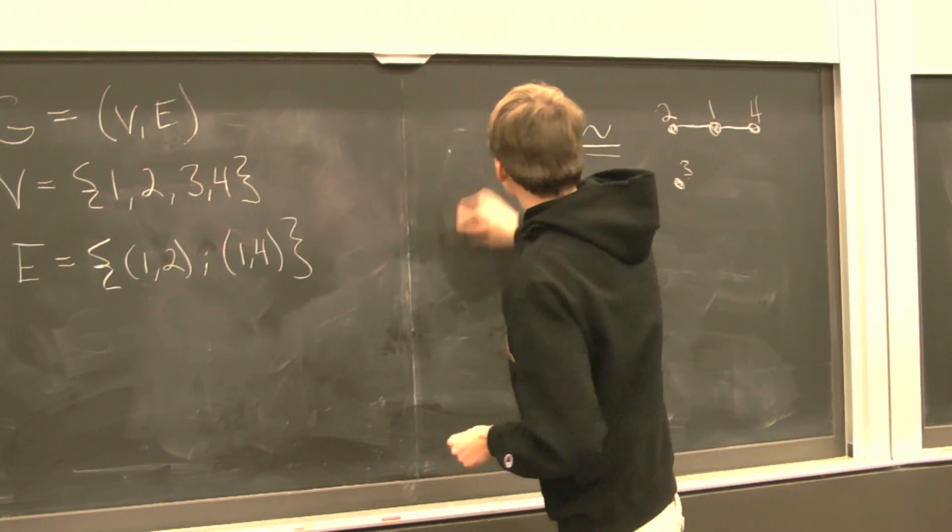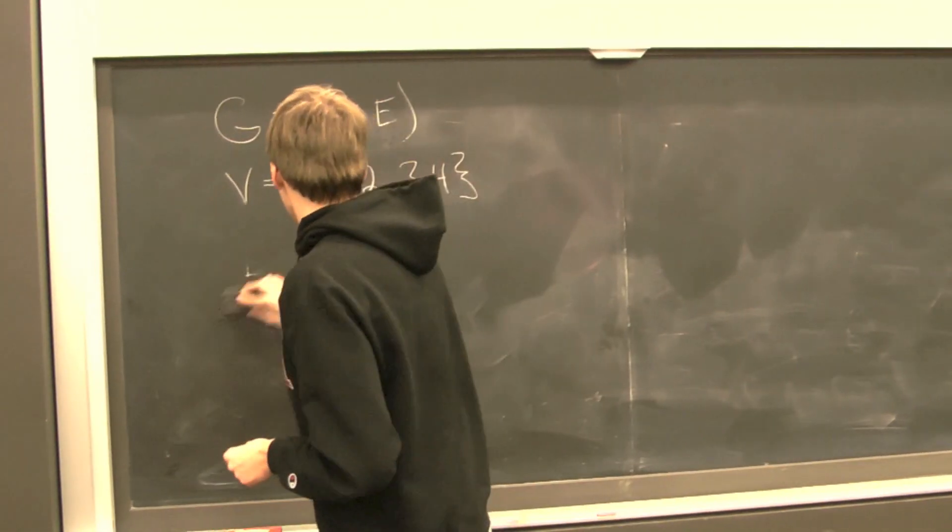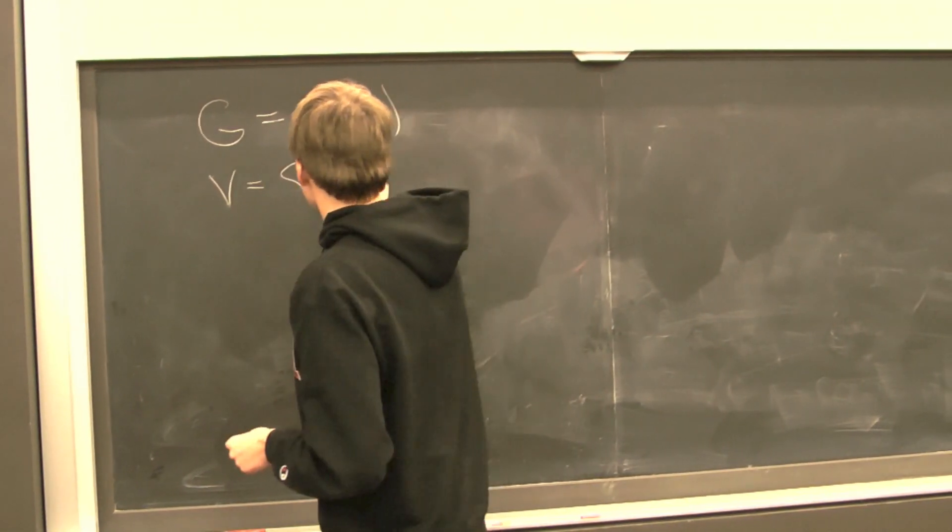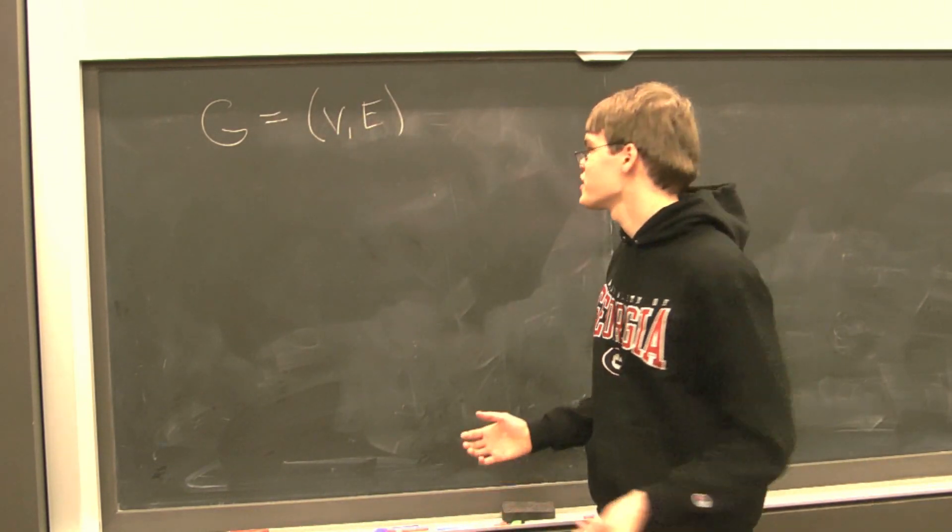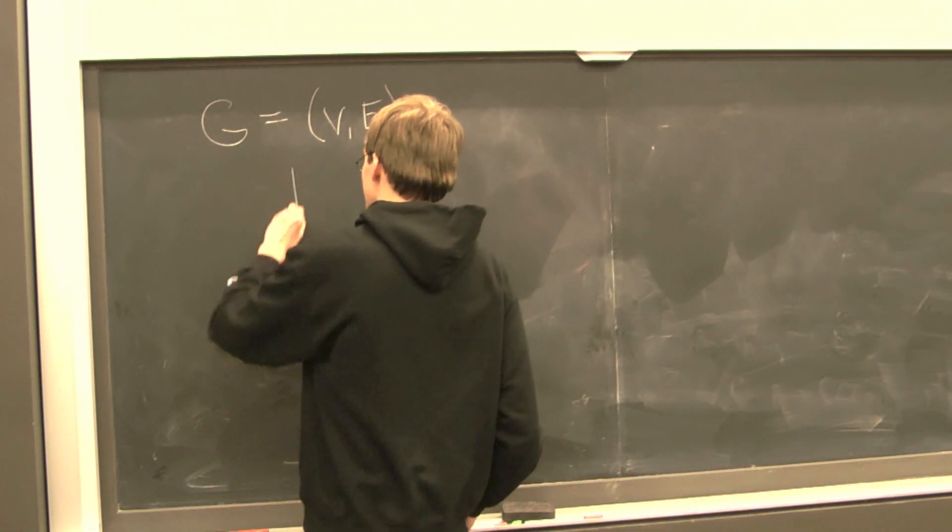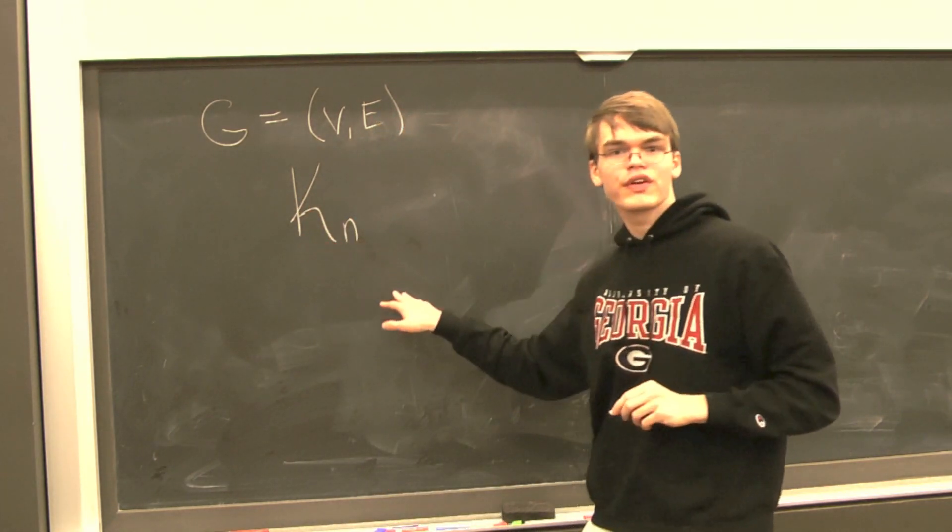Next, I want to introduce the idea of a complete graph. A complete graph on n vertices is typically denoted in the literature as K sub n. This means a complete graph in n vertices.